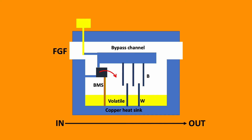In a typical plenum vaporizer, fresh gas flow moves from left to right. There are two streams: one via the bypass channel, and the other moves into the vaporizer chamber. The ratio of the amount going into the bypass chamber versus the vaporizing chamber is determined by the splitting ratio, set by the concentration dial adjusted by the anesthetist. To ensure the gas entering the vaporizer is fully saturated, we increase the surface area using wicks and baffles.